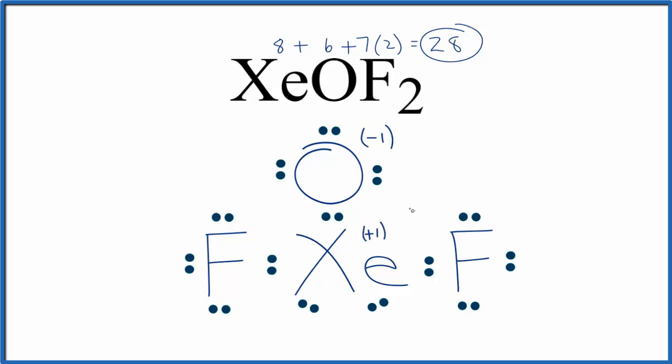With formal charge, we want them to be as close to 0 as possible. So if we were to move this pair of electrons here to form a double bond, remember, xenon can have more than 8. Now the formal charge for each one of these is 0. Same for the fluorines. So this is actually a better Lewis structure for XeOF2 because our formal charges are all 0. If you need help with formal charges, there's a link in the description of this video.